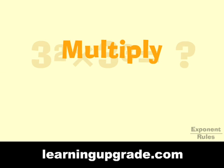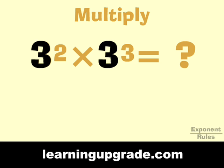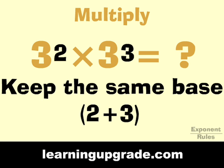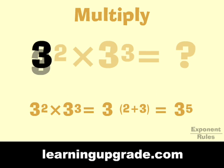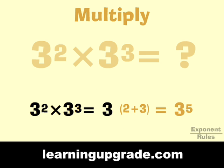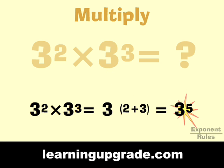When you multiply numbers with exponents that have the same base, you add the exponents and keep the same base. Example: 3 squared times 3 cubed equals 3 to the 2 plus 3 power, which equals 3 to the fifth power.